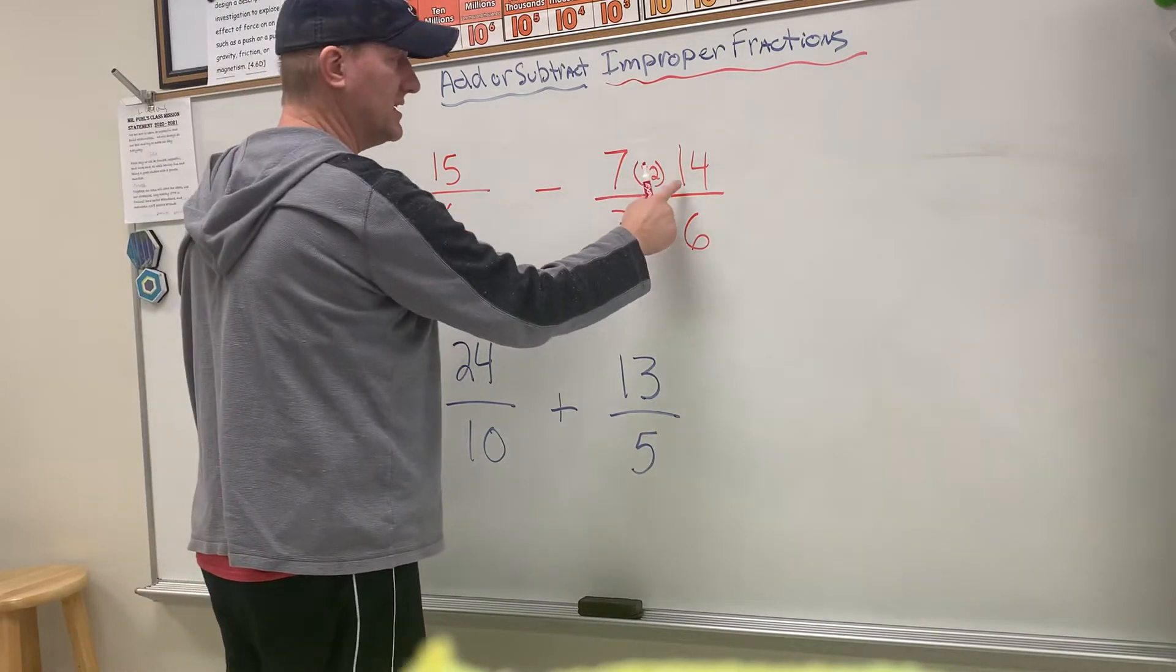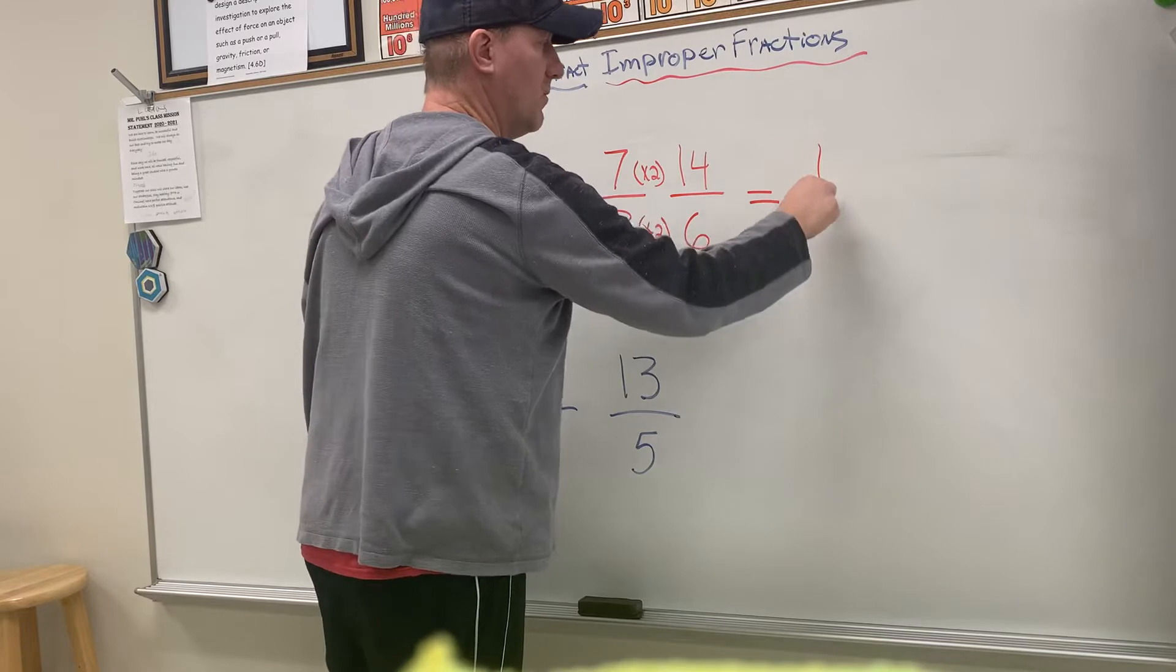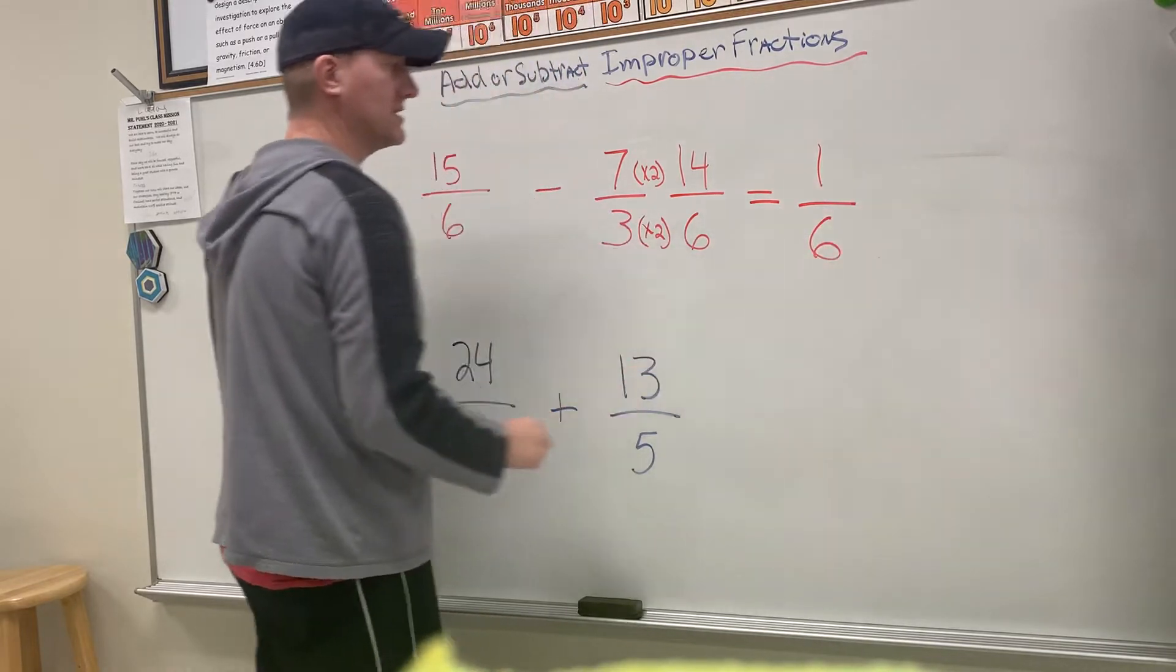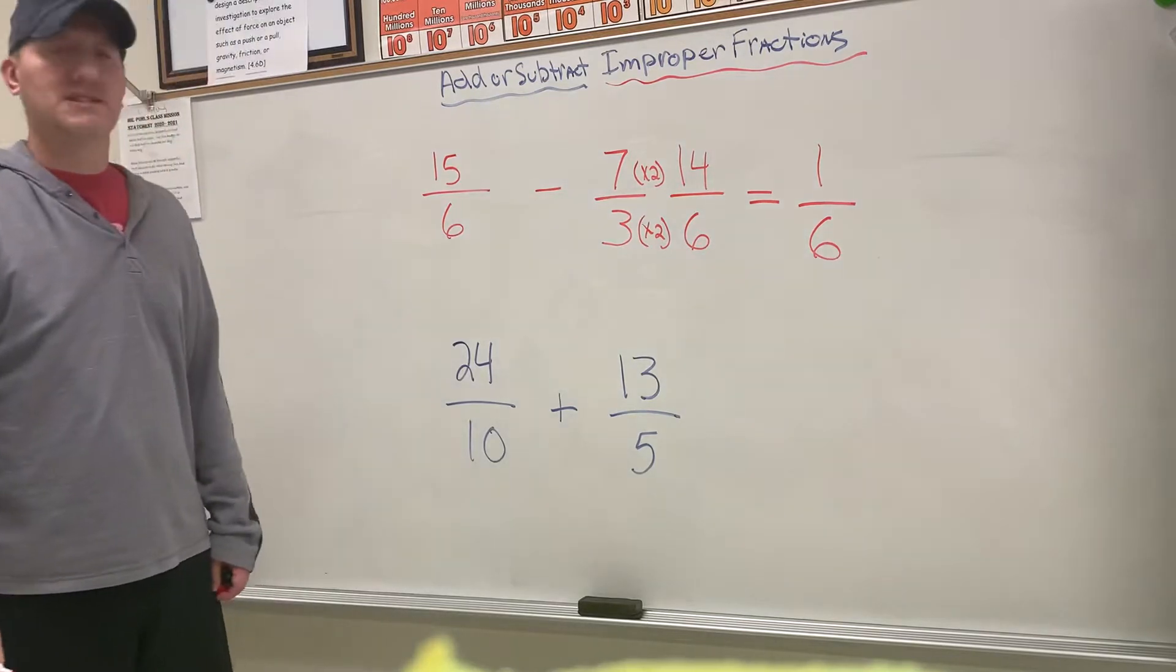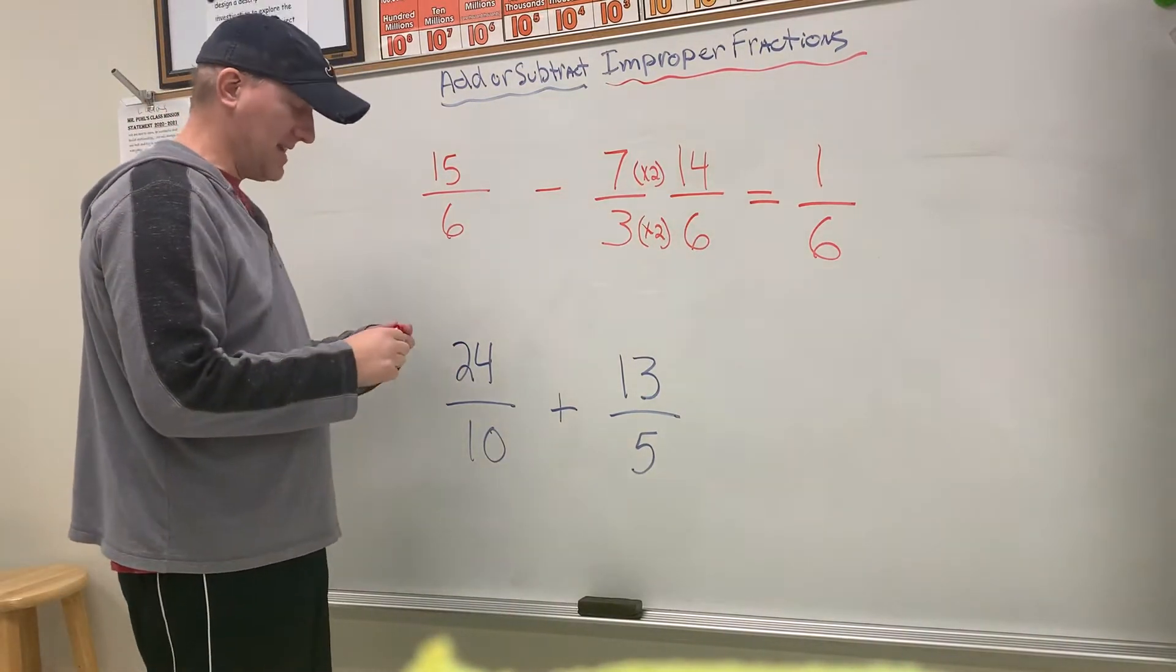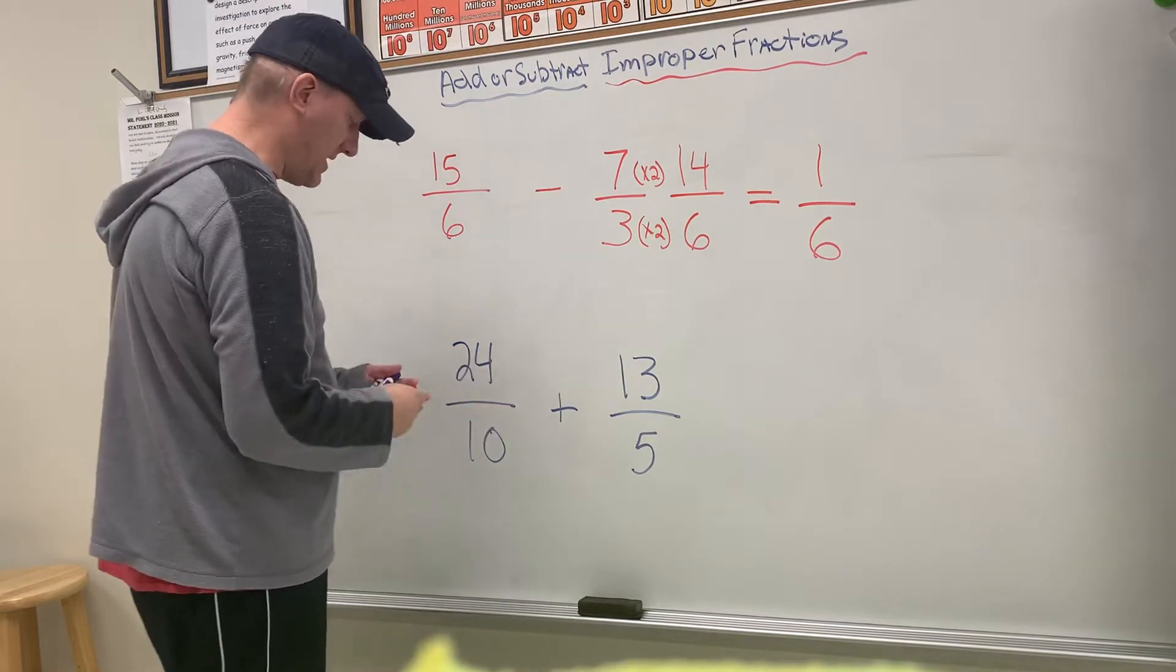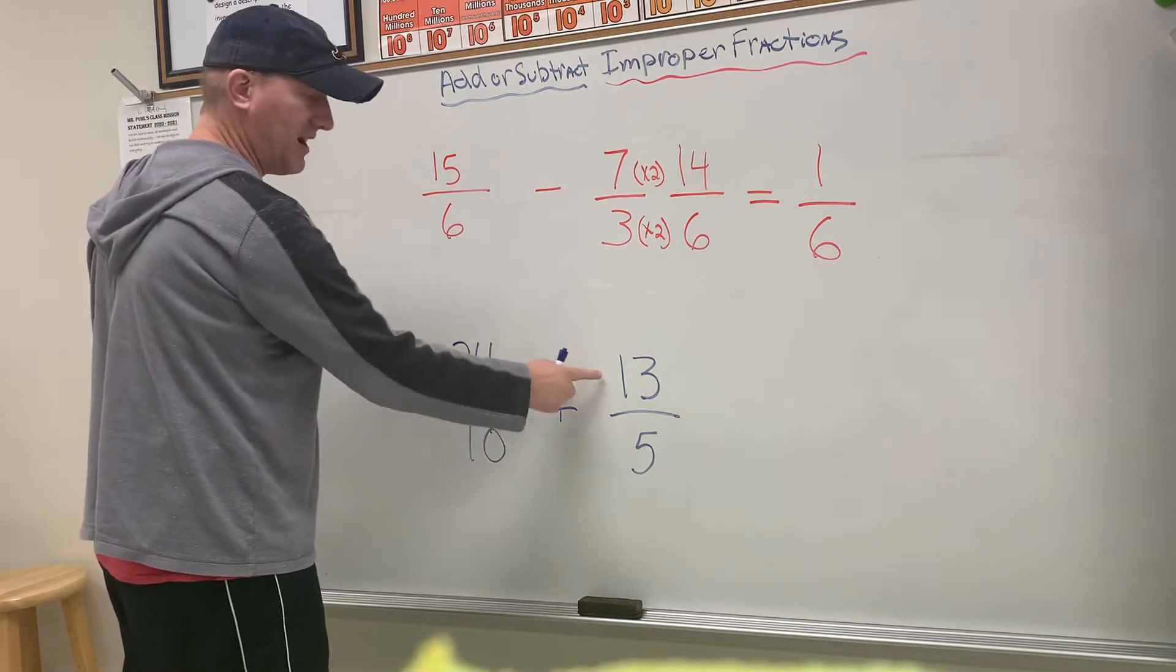Now I can subtract: 15/6 minus 14/6 equals 1/6, because 15 minus 14 is 1. That's all you have to do—find a common denominator. Same with this problem down below: I have 24/10, an improper fraction, and I'm adding it to 13/5.